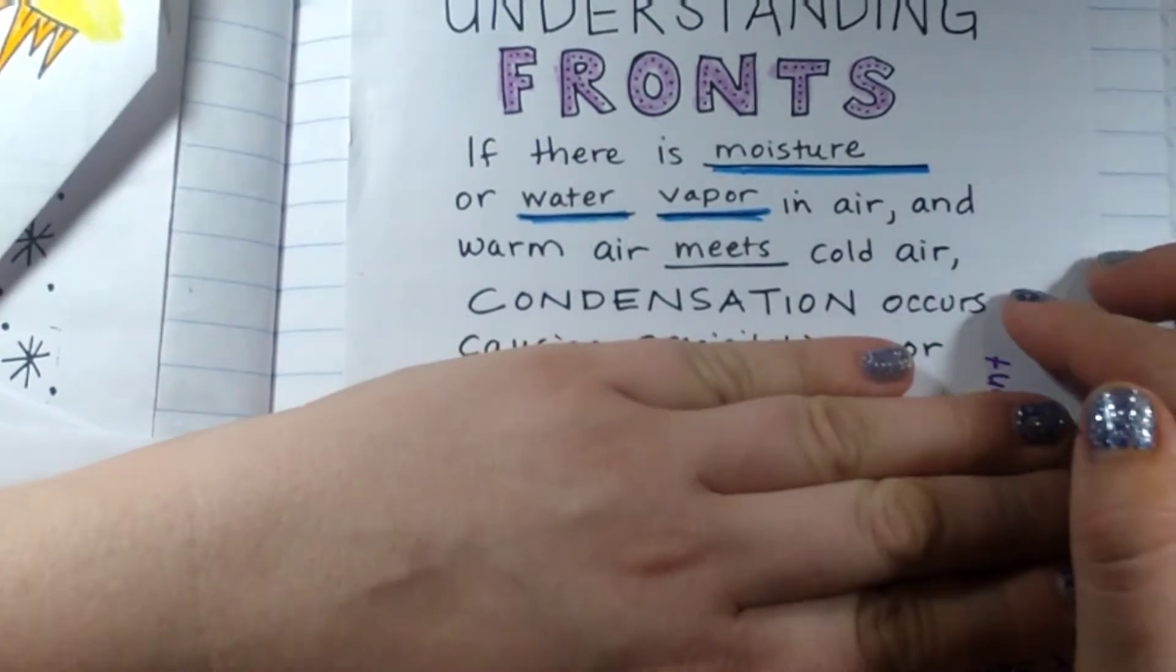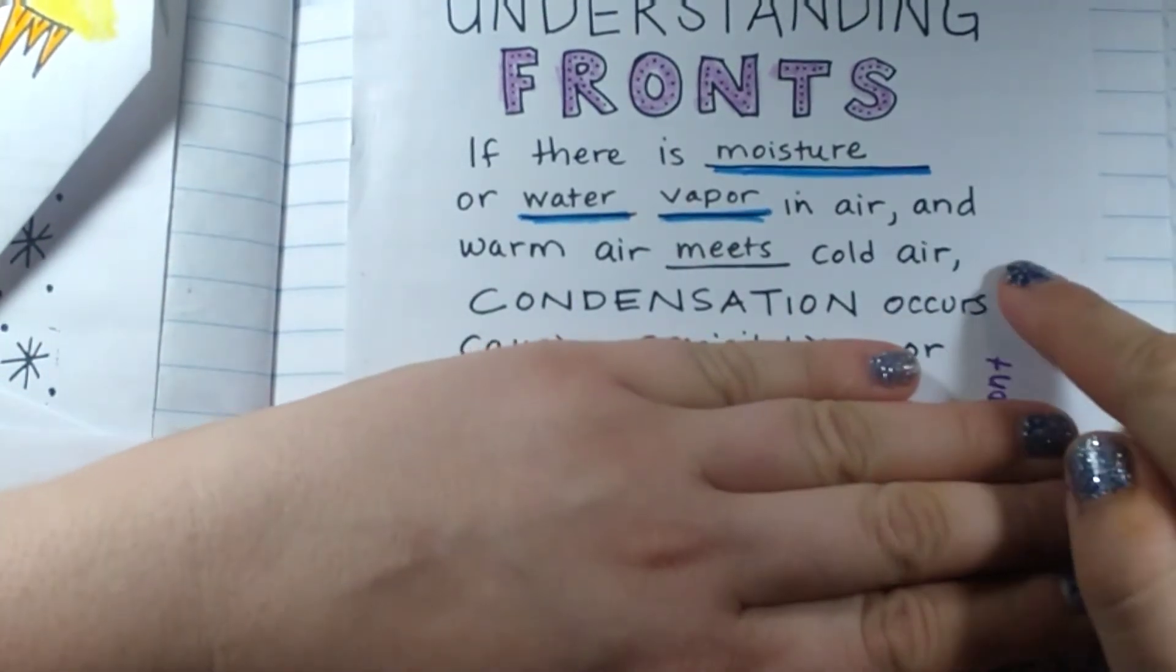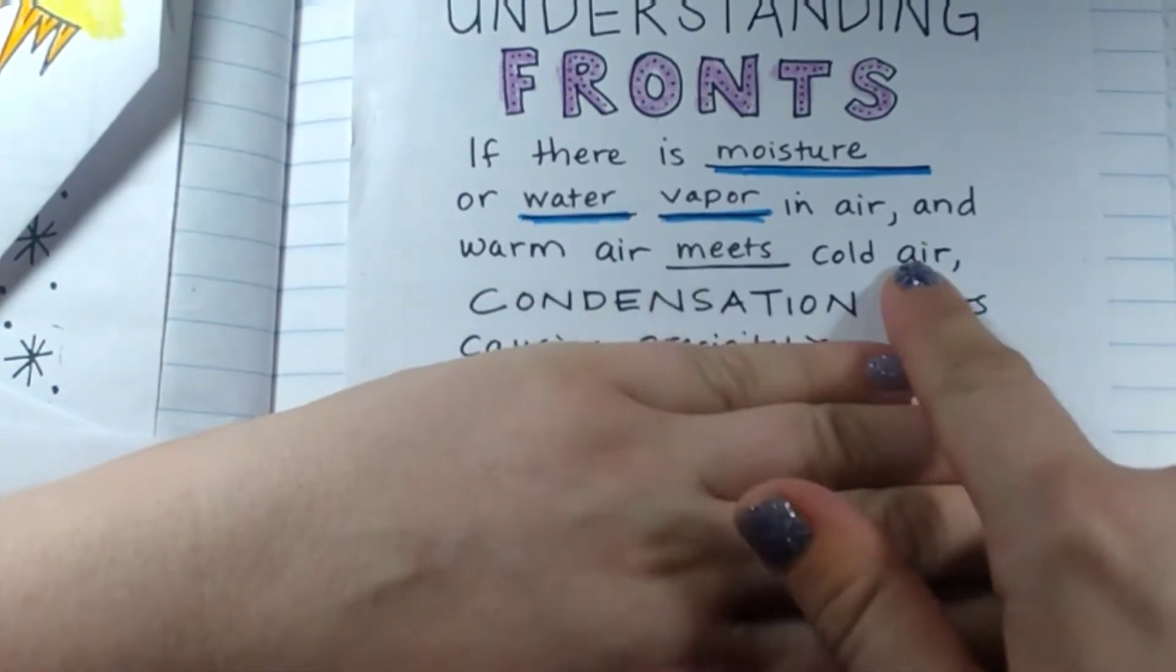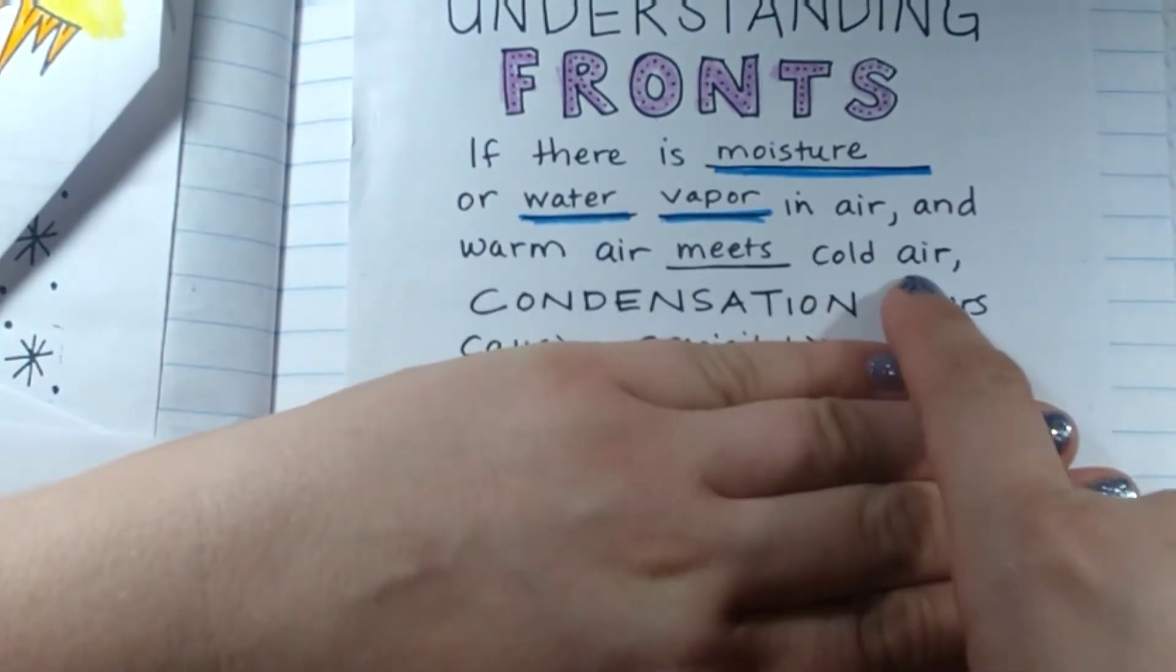Before we talk about this, let's think about the water cycle. When the water cycle happens, it's when something cools down, when something that is warm cools.